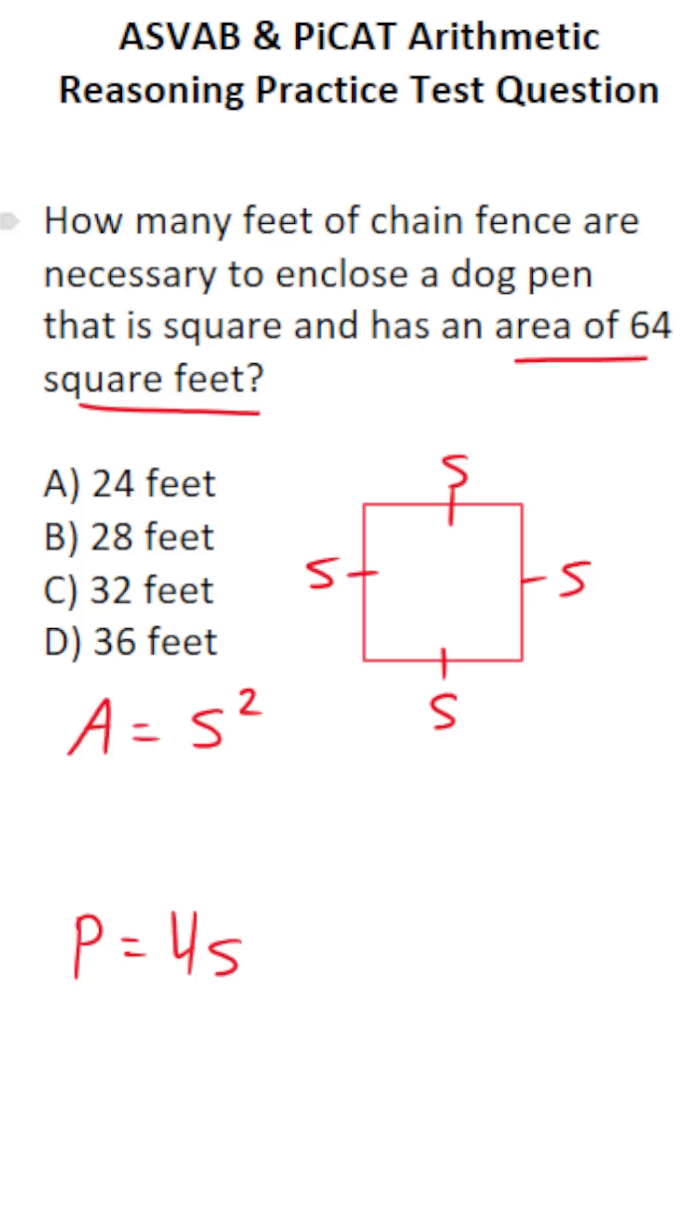In this case, we're told the area is 64 square feet. We can plug that in right here. As you can see, we need to solve for S so that we can plug S into the perimeter formula and get our answer.